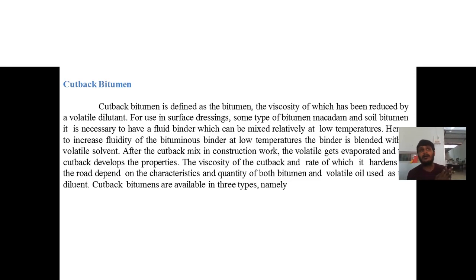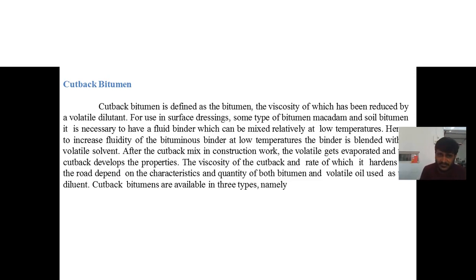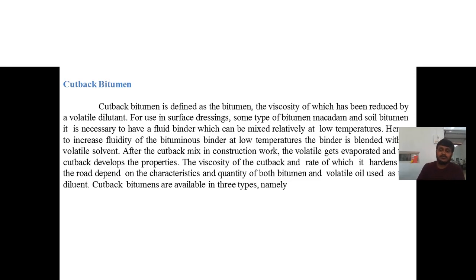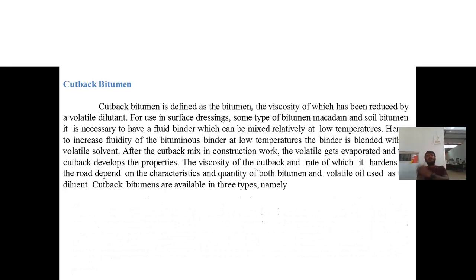Bitumen is further classified into cutback bitumen and bitumen emulsion. Cutback bitumen is defined as bitumen whose viscosity has been reduced by a volatile diluent. For surface dressings, bitumen macadam, and soil bitumen, it is necessary to have a fluid binder that can be mixed at relatively low temperatures. Hence the binder is blended with a volatile solvent. After the cutback mix is used in construction, the volatile evaporates and the cutback develops its binding properties. Cutback bitumens are available in three types: rapid curing (RC), medium curing (MC), and slow curing (SC).